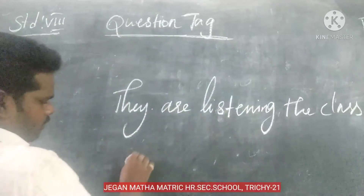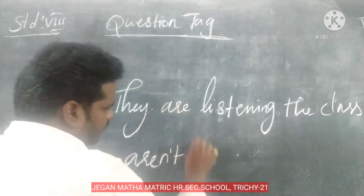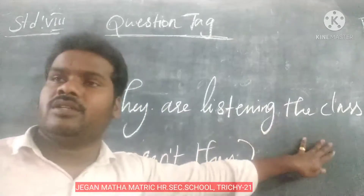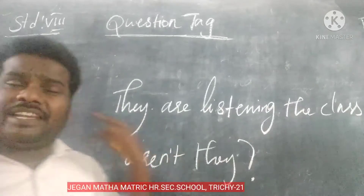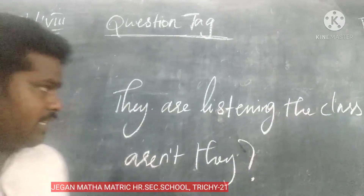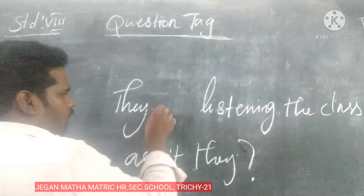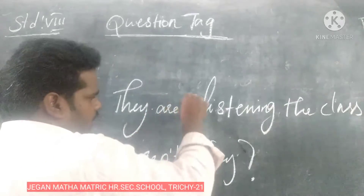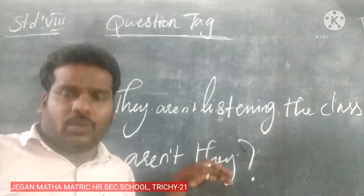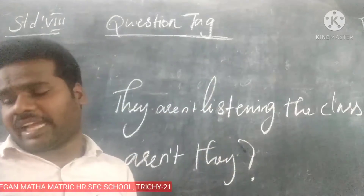If the statement is positive, the tag is negative. If the statement is negative, the tag is positive. For example: 'They are not listening in the class' — this is a negative statement, so the question tag is positive: 'are they?' So the rule is: positive means negative, negative means positive.